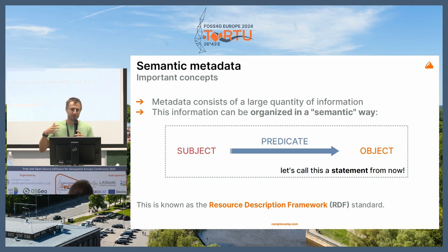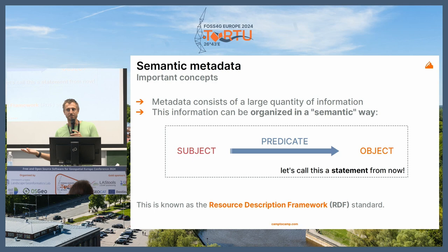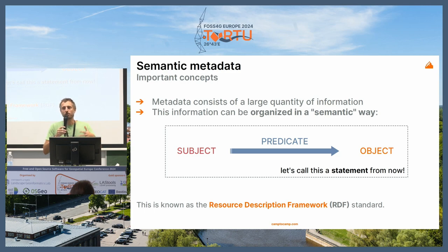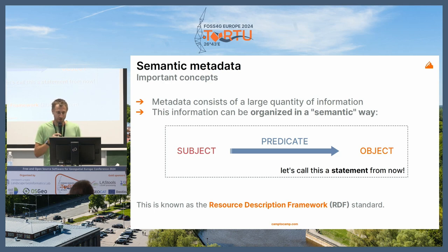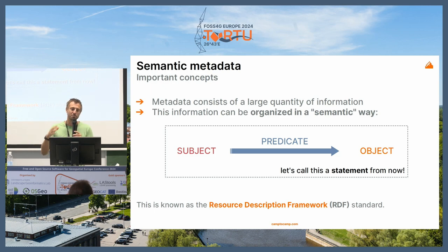Metadata consists of many pieces of information about a dataset — what it has been produced, when, by who, what is linked, what service is it provided by, etc. We try to organize all these things in a semantic way to give meaning and not rely on structured things. We do that by representing all information as a subject, a predicate, and an object — we call it a statement. As an example: 'this contact' is the subject, 'is of type' is the predicate, and 'a person' is the object.